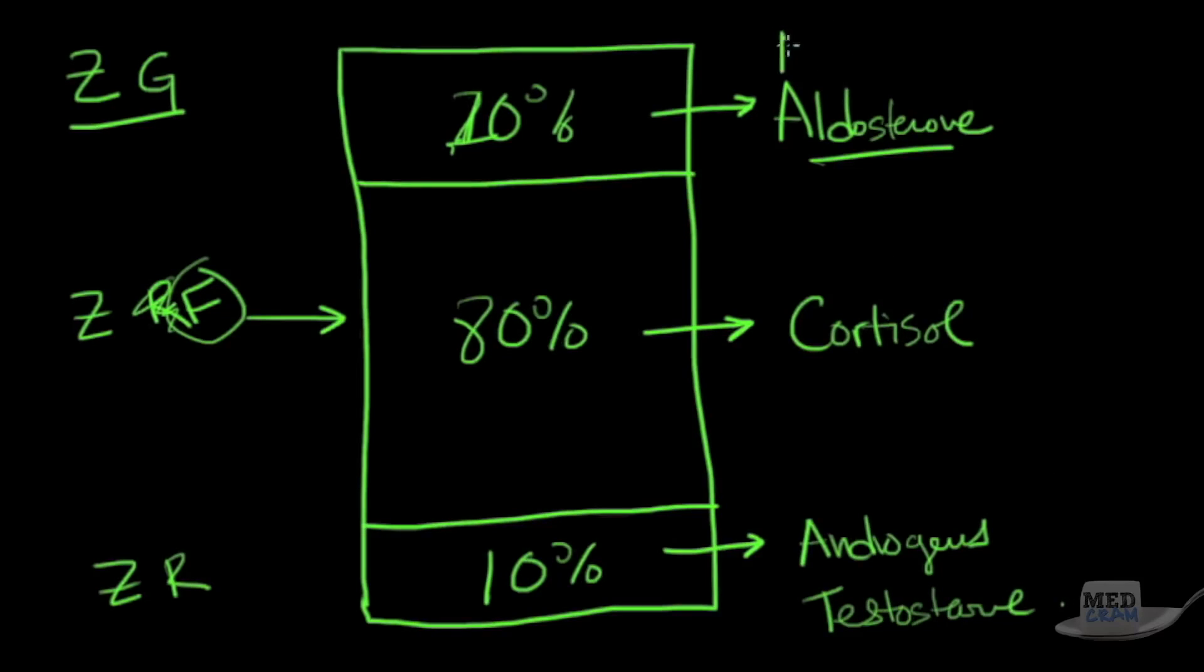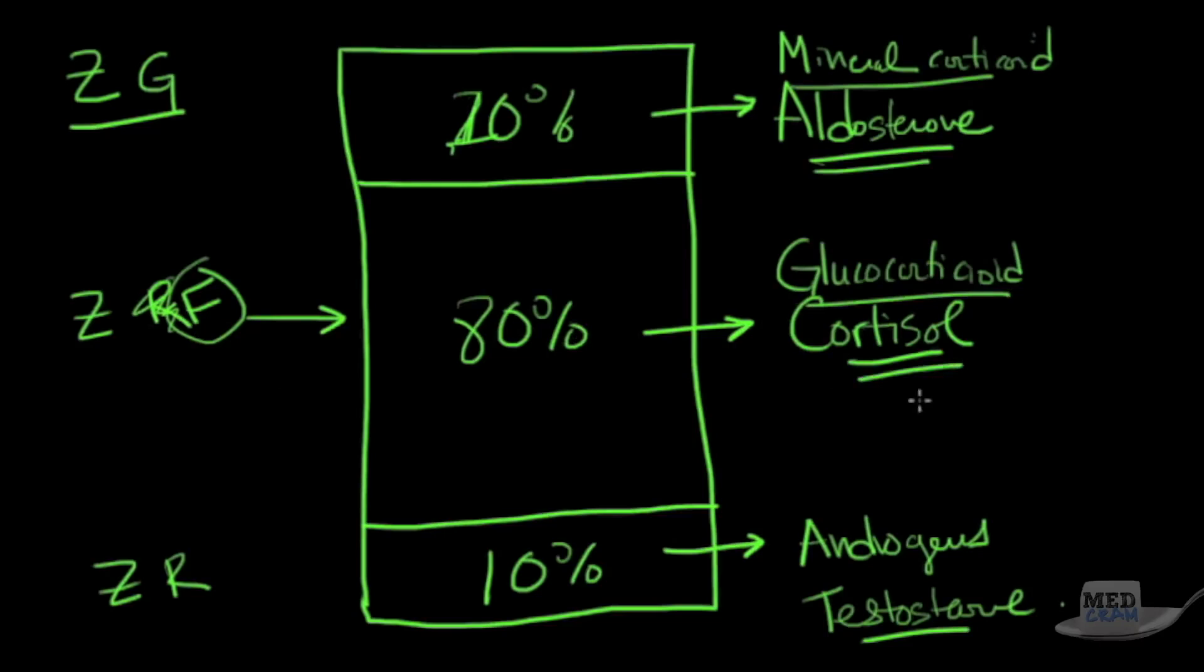Aldosterone is what's known as a mineral corticoid, and cortisol is what's known as a glucocorticoid. So the zona glomerulosa makes mineral corticoids, specifically aldosterone. The zona fasciculata makes glucocorticoids, mainly cortisol. And the zona reticularis makes androgens, primarily testosterone.